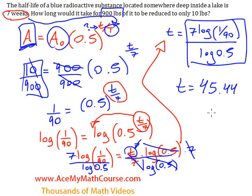So it takes roughly 45 weeks for 900 pounds of the substance to be reduced to only 10 pounds. That's it.